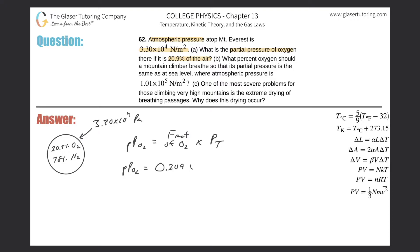This problem is actually straightforward. The fraction converted to decimal is 0.209, then multiply by the total atmospheric pressure of 3.30 times 10 to the 4th. So the partial pressure of O2 equals 0.209 multiplied by 3.3 times 10 to the 4th.